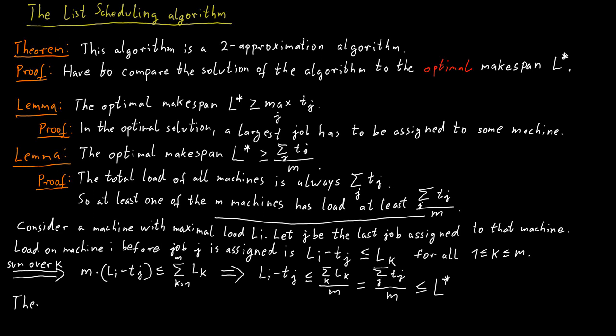We can now put everything together. So the final load of machine i is li, which is equal to li minus tj plus tj. So we just split it into the load we had before we assigned the last job j and the load that is contributed by job j itself. And we know that both of those components are individually bounded by the optimum makespan L star. And so in total, this is just bounded by 2 times L star, proving that this greedy algorithm is a 2-approximation because the makespan it produces is at most twice as large as the optimum one.